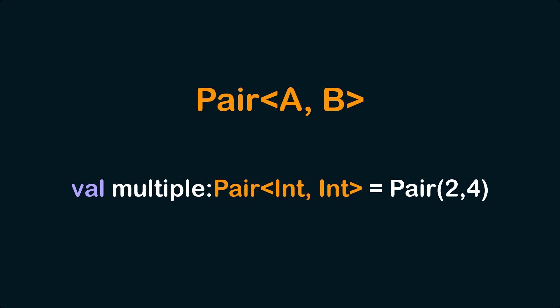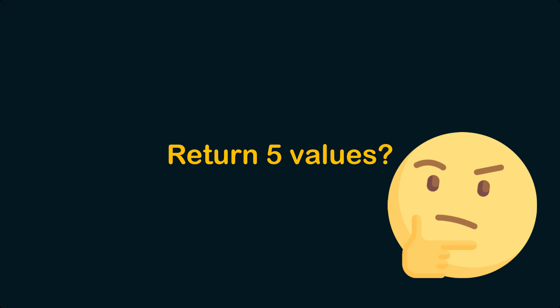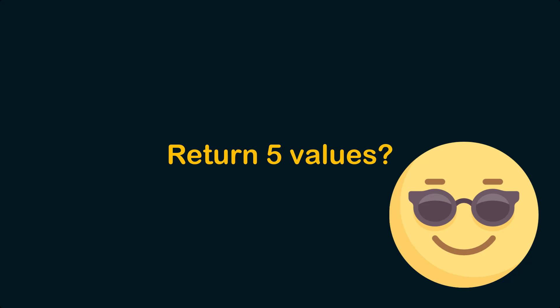Today we're going to talk about how to do this synchronously. In Kotlin there are multiple ways: first there is the class called Pair, which allows you to return two values, then there is Triple, which allows you to return three values. We're also going to create our own custom class with which we can return more than three values — for example, five values. Let's get started.